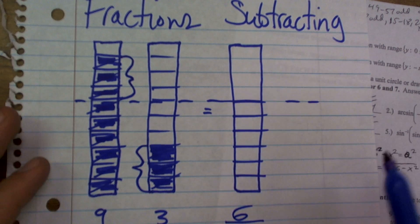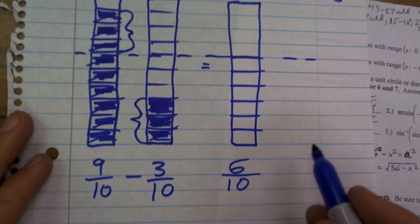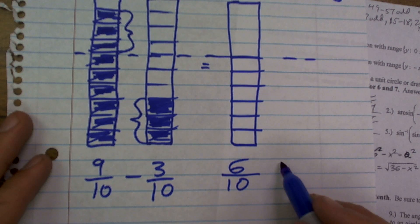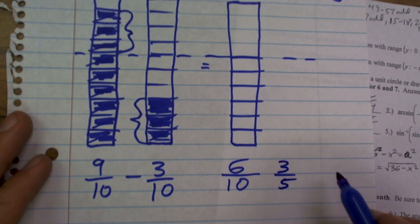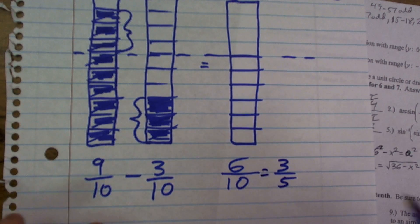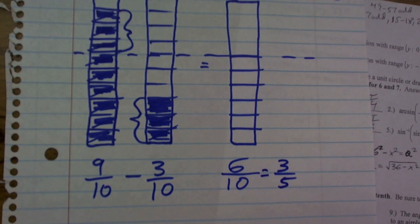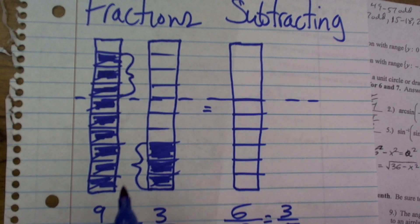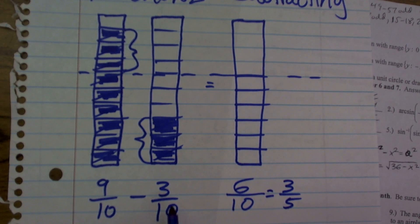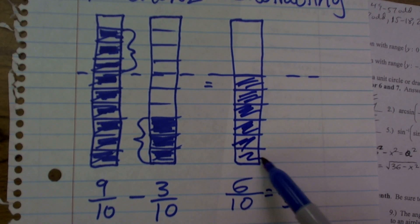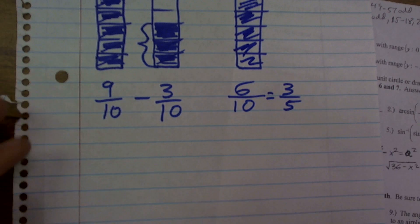Another important point: when we're reducing 6/10, we can divide our top and bottom by 3 to reduce it, and we'll get 3/5. So just make sure that when you're subtracting fractions, your denominators are the same, and then you just subtract the numerators. Let's look at another example.